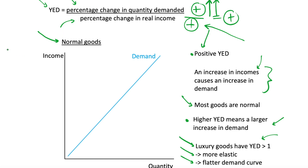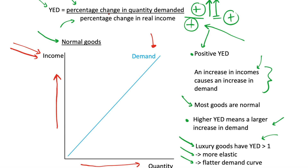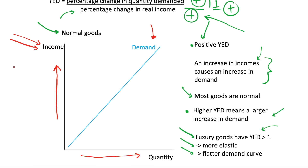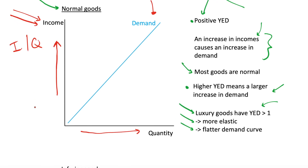This normal good concept with positive YED gives us a diagram with an upward sloping demand curve. This might seem strange because we've been looking at demand curves with price on the vertical axis, but this is different — on this vertical axis we have income. So it makes sense: as we increase our incomes we also increase our quantity demanded. We have an upward sloping demand curve for normal goods, but we're in income and quantity space, not price and quantity space.